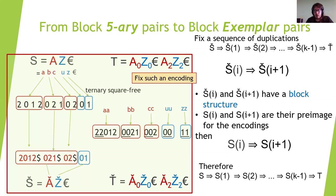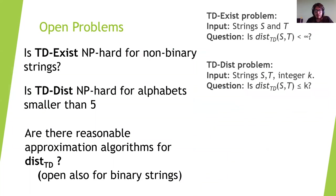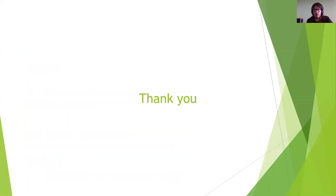We will not prove this now because it's technical, but you can find it in the article — it is the main part. This leaves us with two open problems: first, is TD-exist NP-hard for non-binary strings? We don't know yet — it could already be hard for ternary strings. Second, is the tandem duplication distance problem NP-hard for alphabets smaller than five? We don't know, even for alphabets of size two the problem is open. Also, are there reasonable approximation algorithms for TD-dist? This remains open even for binary strings. Thank you for your attention.